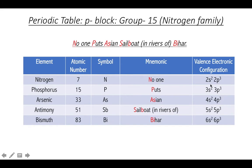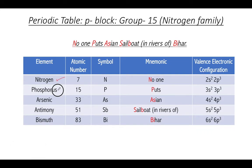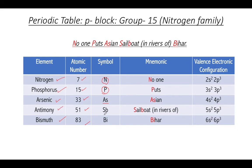Next is Group 15, the nitrogen family, also having five elements: nitrogen, phosphorus, arsenic, antimony, and bismuth, with atomic numbers 7, 15, 33, 51, and 83. Their symbolic representations: nitrogen is N, phosphorus is P, arsenic is As, and antimony is Sb — Sb is derived from the Latin term Stibium — and bismuth is Bi.